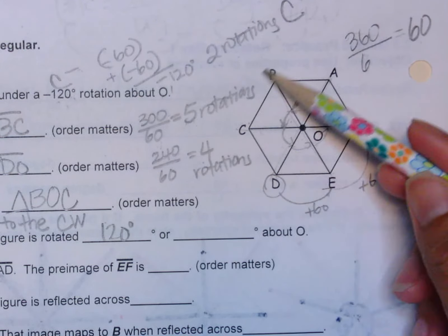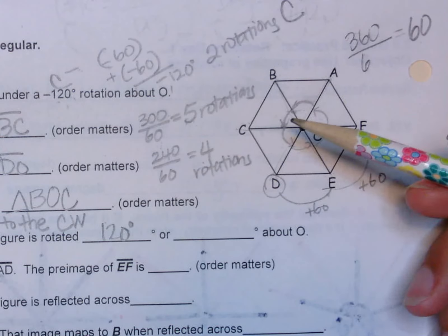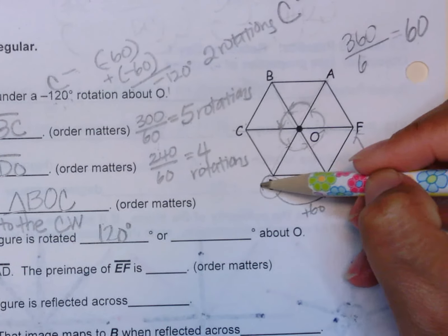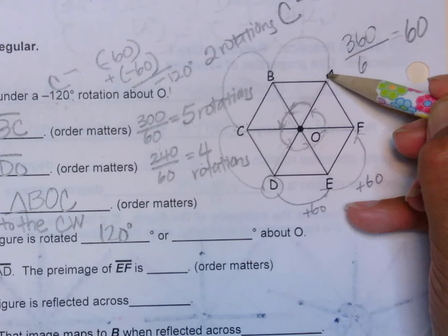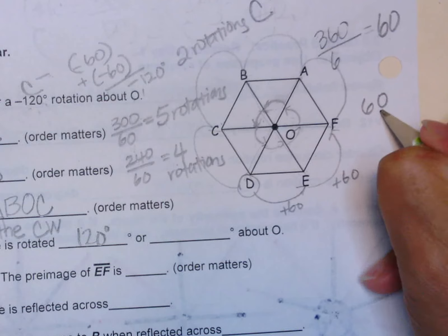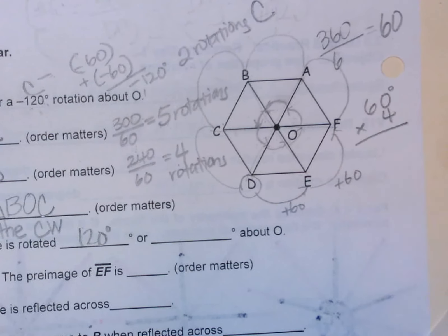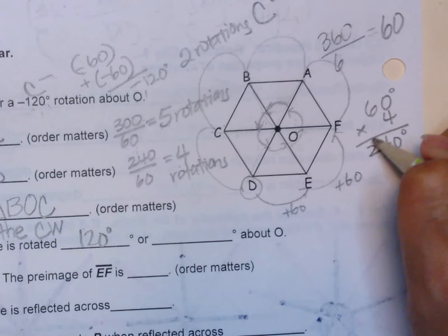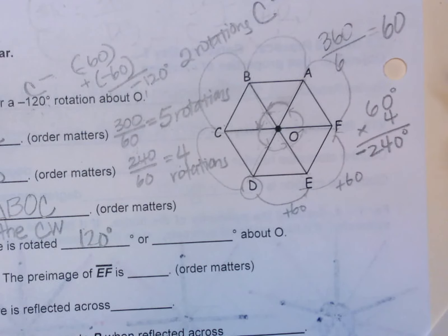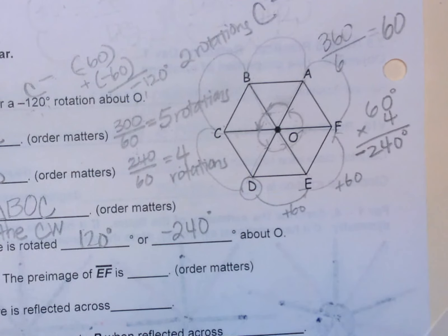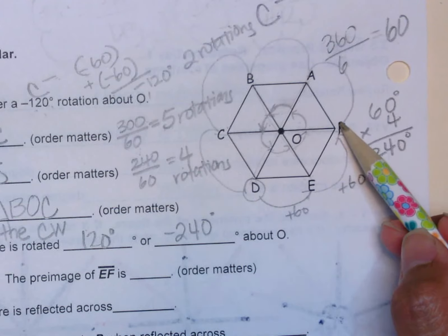However, you can also go the negative direction, which is the clockwise position to get to F. Let's see how long it would take to get there. There's one, two, three, four times 60, so four rotations of 60 degrees. That gives you 240 degrees, but it's negative, so you have to put a negative on it. So it's very important that you need to know whether you go negative or positive.